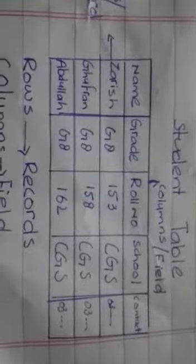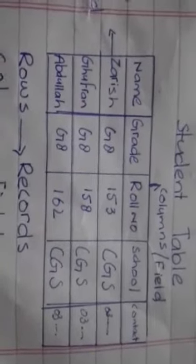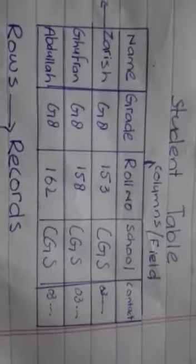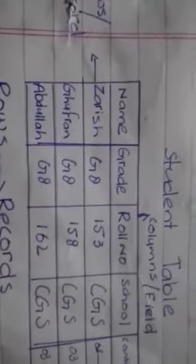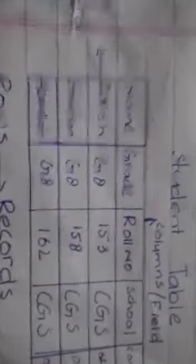For example, we have an entity called Zarish. Other entities are Gufran and Abdullah. We have created a database for a school. Rows are called records and columns are called fields.